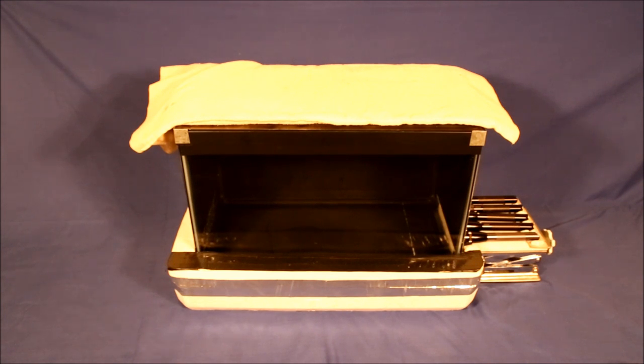A cloud chamber consists of four parts: an insulated base usually used to hold dry ice as a cold source, a glass tank in this case a 10 gallon aquarium, a lid with a layer of felt or some absorbent material which is saturated in alcohol, usually methyl alcohol or 91% isopropyl, an optional heating pad, and most importantly a source of light to illuminate the tracks.